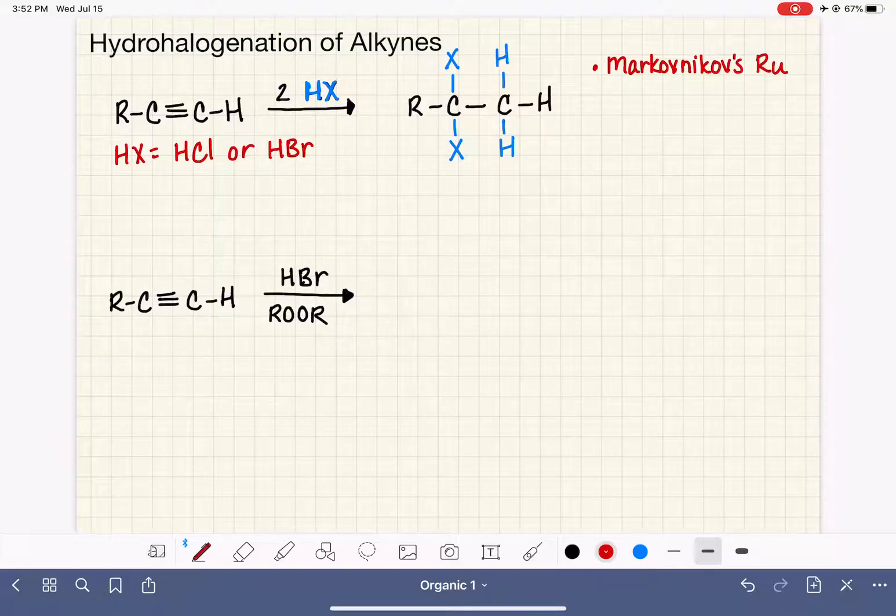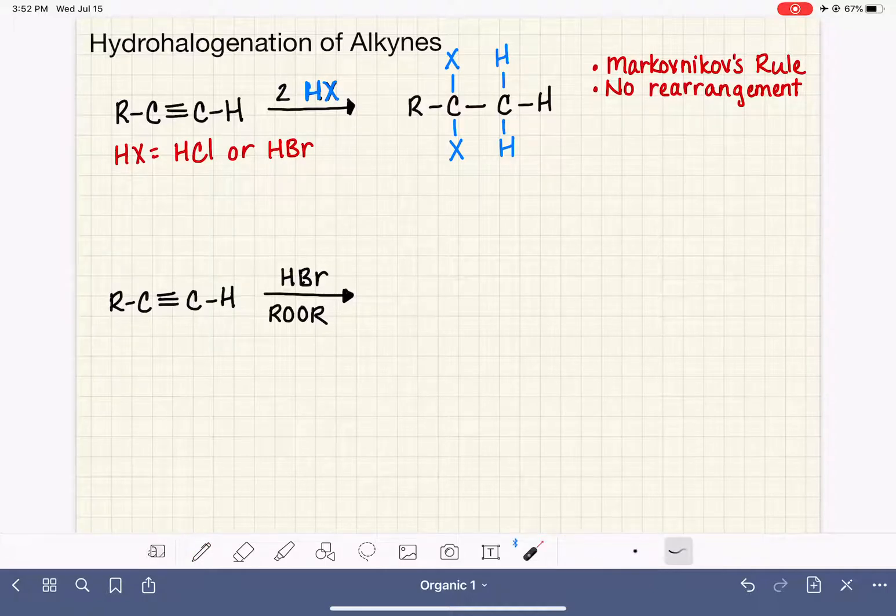The only way that this reaction is different from hydrohalogenation of an alkene is that we have no rearrangement in this reaction, which means that this reaction proceeds via a different mechanism than the one that we see with an alkene. There's never a carbocation formed, which is why we don't see any rearrangement.